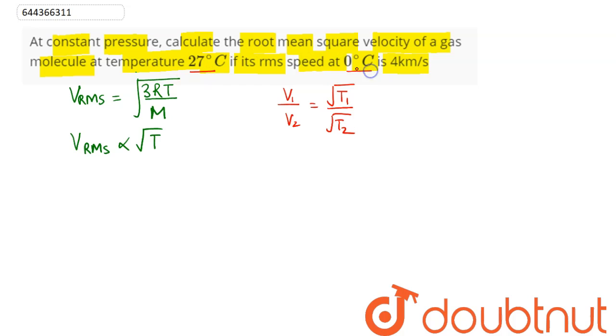We can say speed at 0 divided by speed at 27 comes as 0 degree Celsius equals 273 Kelvin divided by in the denominator 27 degree Celsius can be written as 300 Kelvin.